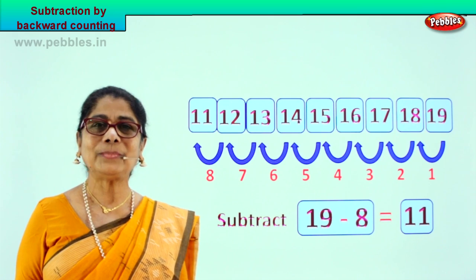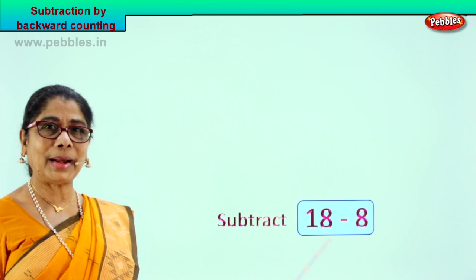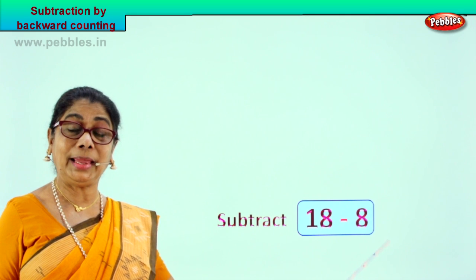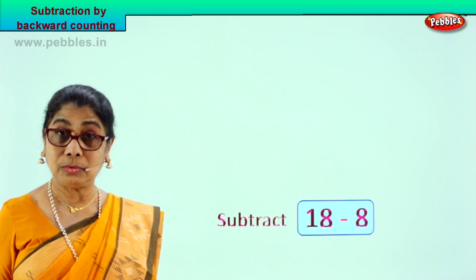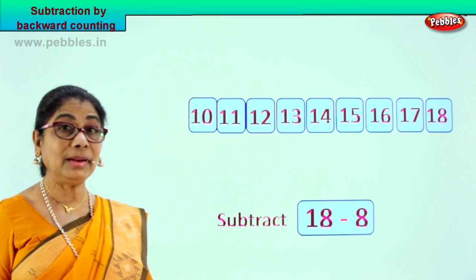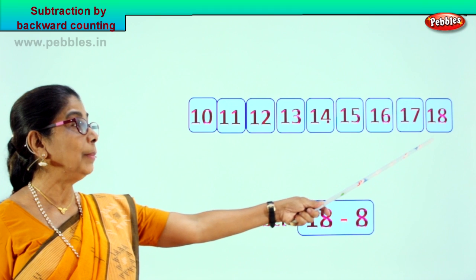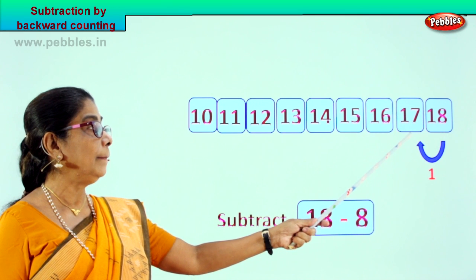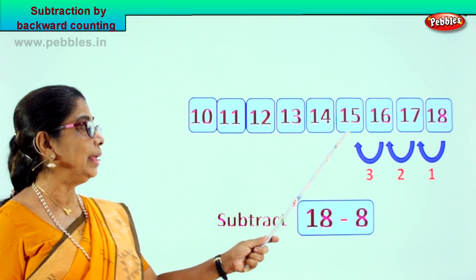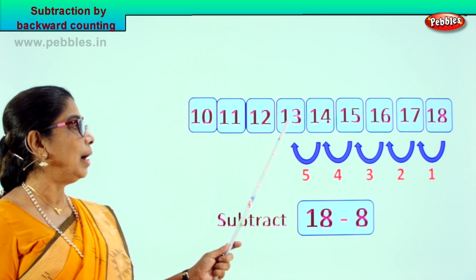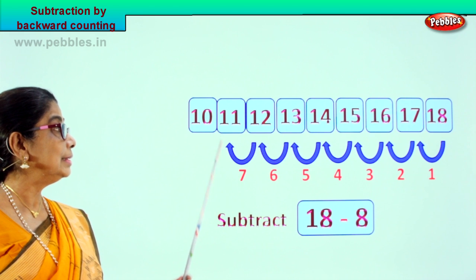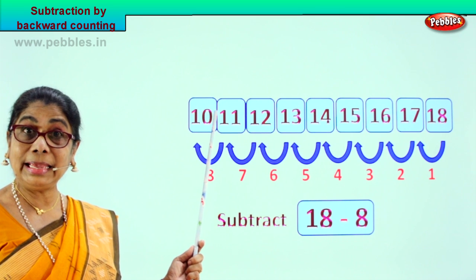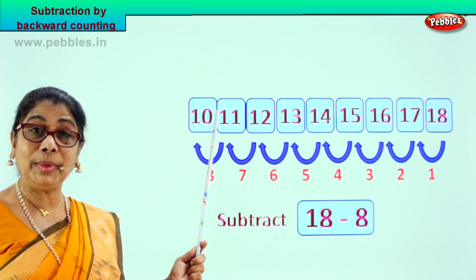Shall we take another sum? Let's look at our sum: subtract 18 minus 8. What is 18 take away 8? From 18 we will count 8 steps backward and we will come upon the answer. Look. There is number 18 here. Let's count 8 steps backward. 1, 2, 3, 4, 5, 6, 7, 8. We counted from 18, 8 steps backward. What answer did we get? 10.